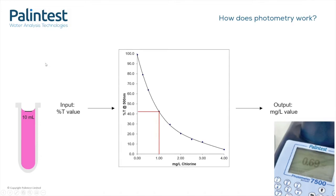So, here is a typical calibration curve. This one here is for free chlorine testing using DPD. The percent T value is converted to a milligrams per litre concentration using the calibration curve, and this readout is displayed on the instrument. In the example here, 43% T is equivalent to one milligram per litre of free chlorine. This calibration is determined in our labs and is stored on the instrument memory, so all the user will see is the displayed reading. All the calculation happens behind the scenes.